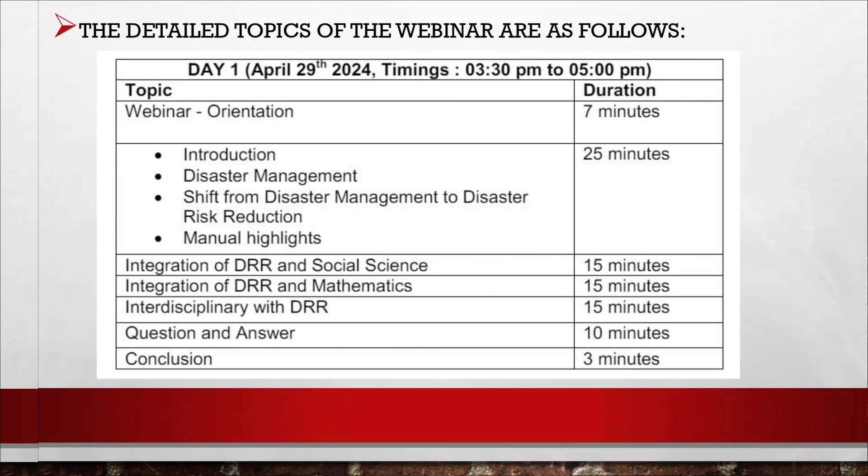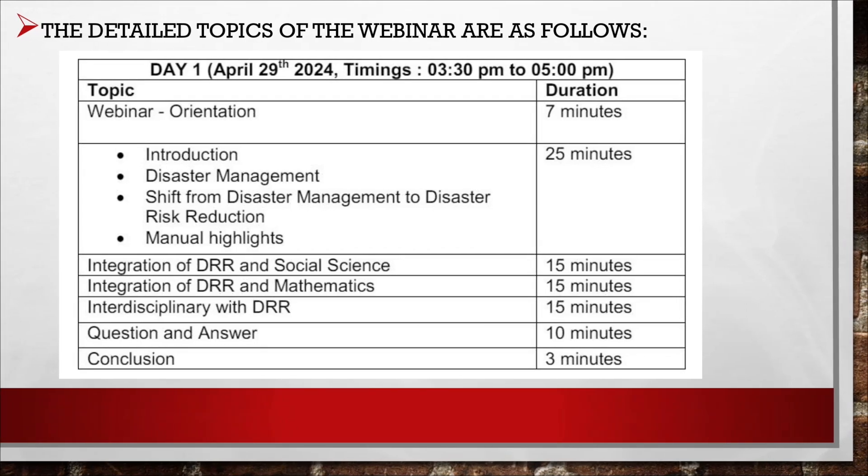On Day 1, we will begin with an orientation, then an introduction to disaster management, followed by the shift from disaster management to disaster risk reduction and manual highlights. Next, we have integration of DRR with Social Science, then integration of DRR with Mathematics, and then interdisciplinary approaches with DRR. Finally, there will be a question and answer session and conclusion.